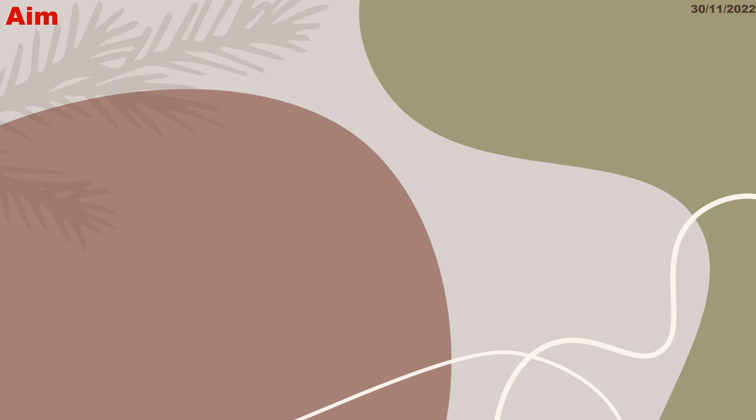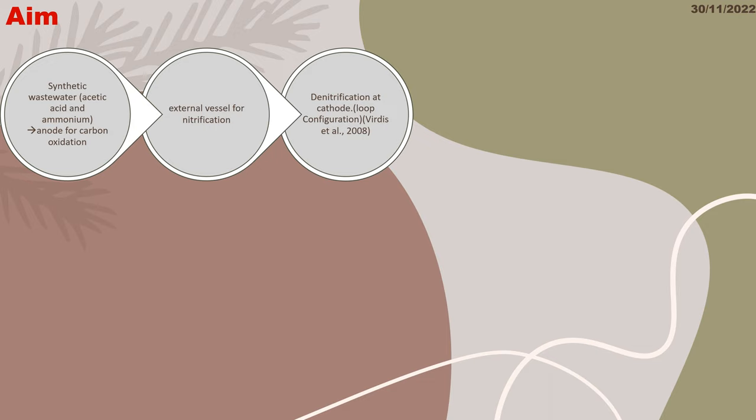In their previous study, wastewater flowed to the anode for carbon oxidation. Then it transferred to an external vessel for nitrification. Finally, denitrification was performed at the cathode. So nitrification and denitrification were performed at different places.